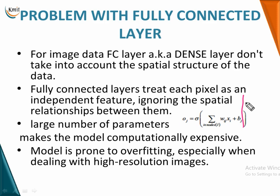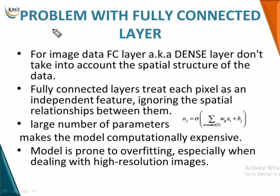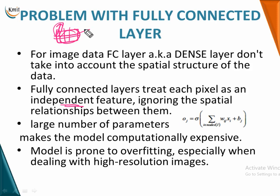With multiple images to work with, your data is spatially connected. You need to take a group of pixels into account to identify the information in an image. But a dense or fully connected layer cannot take into account the spatial structure of image data. A fully connected layer treats each pixel as an independent feature, discarding the spatial interconnection between pixels and the information it provides.